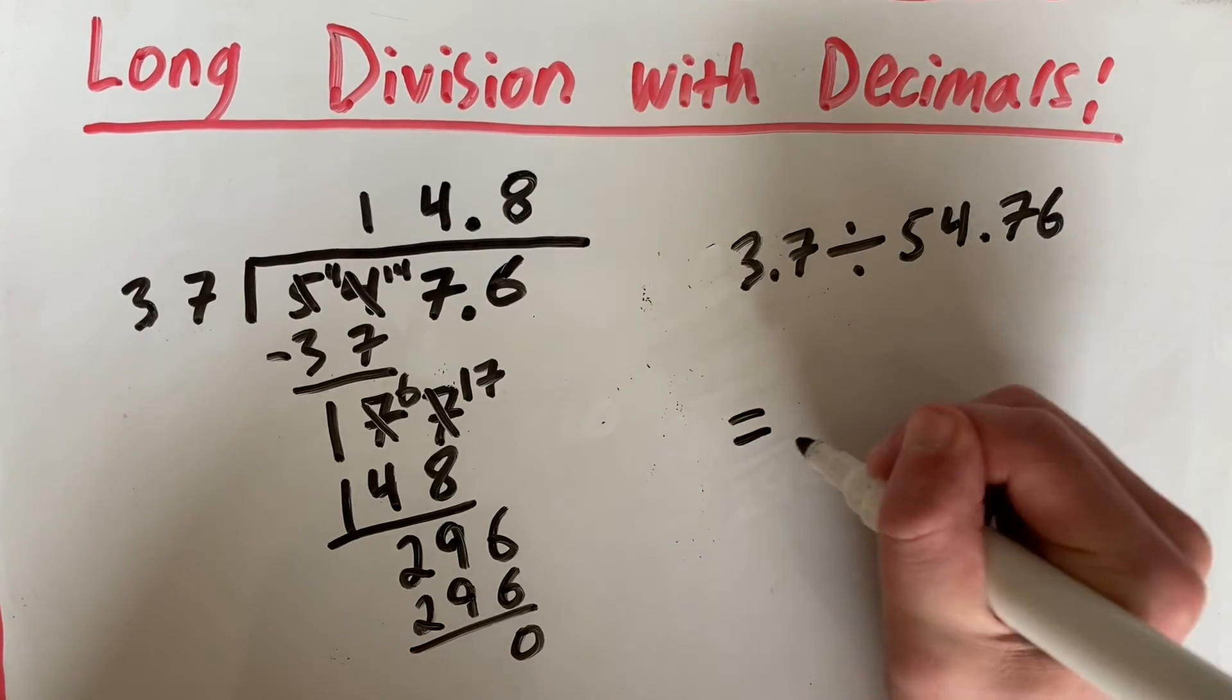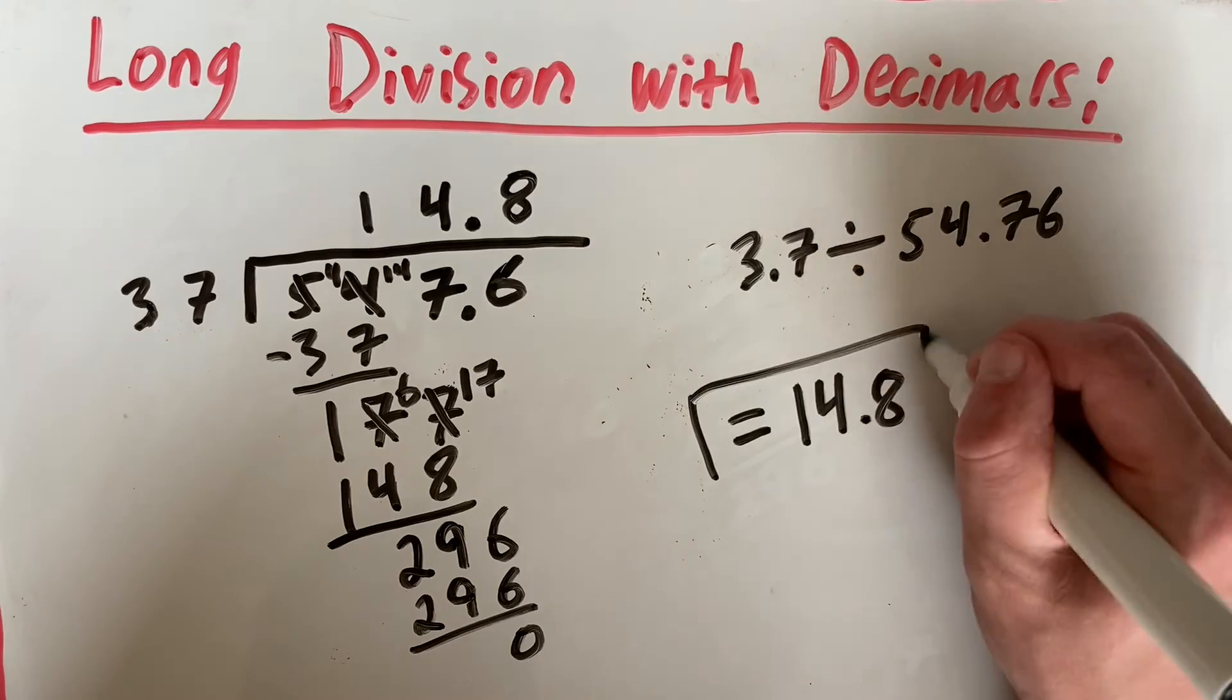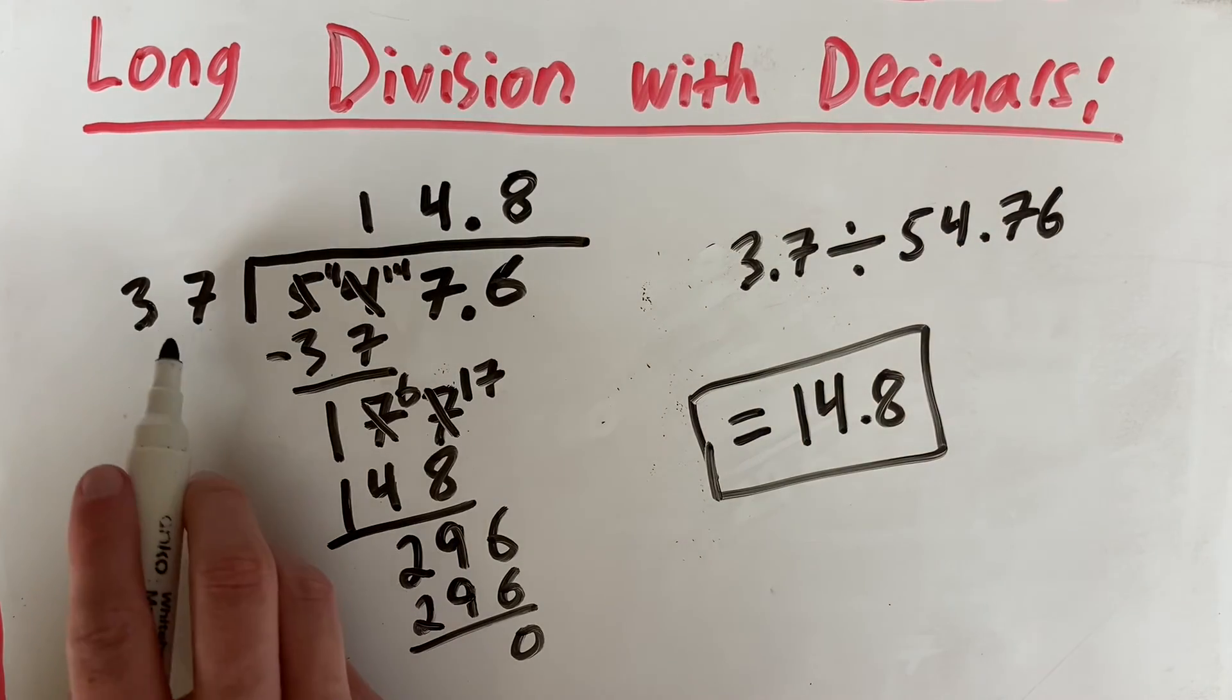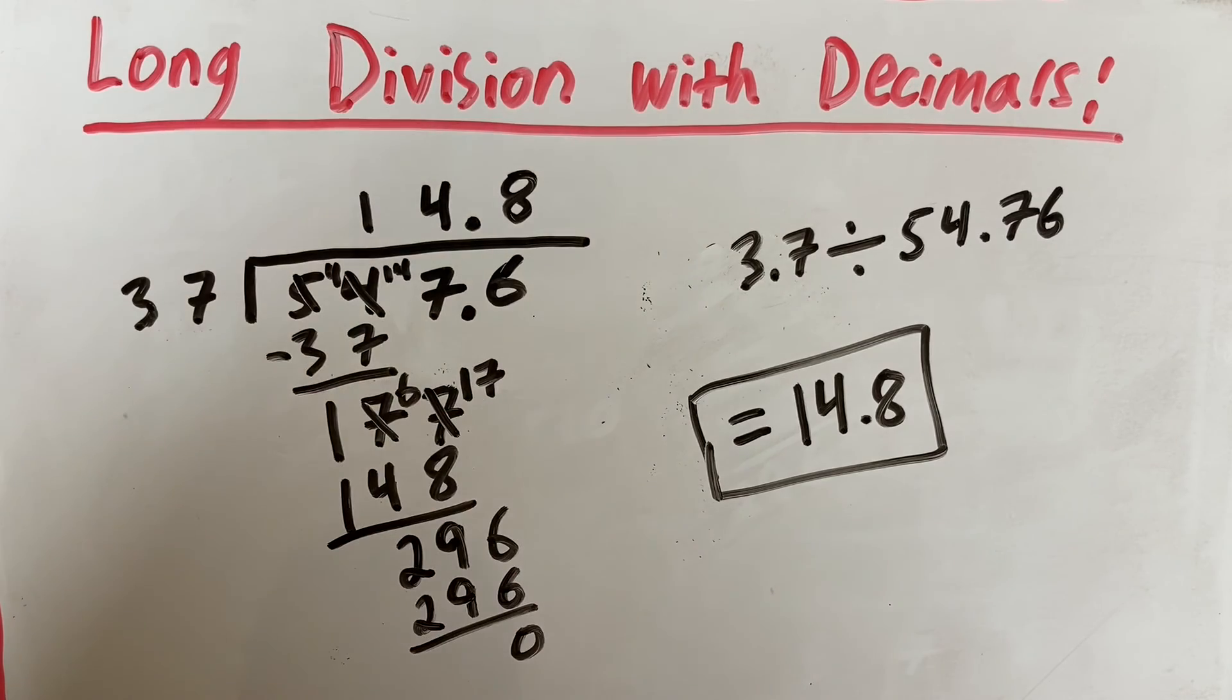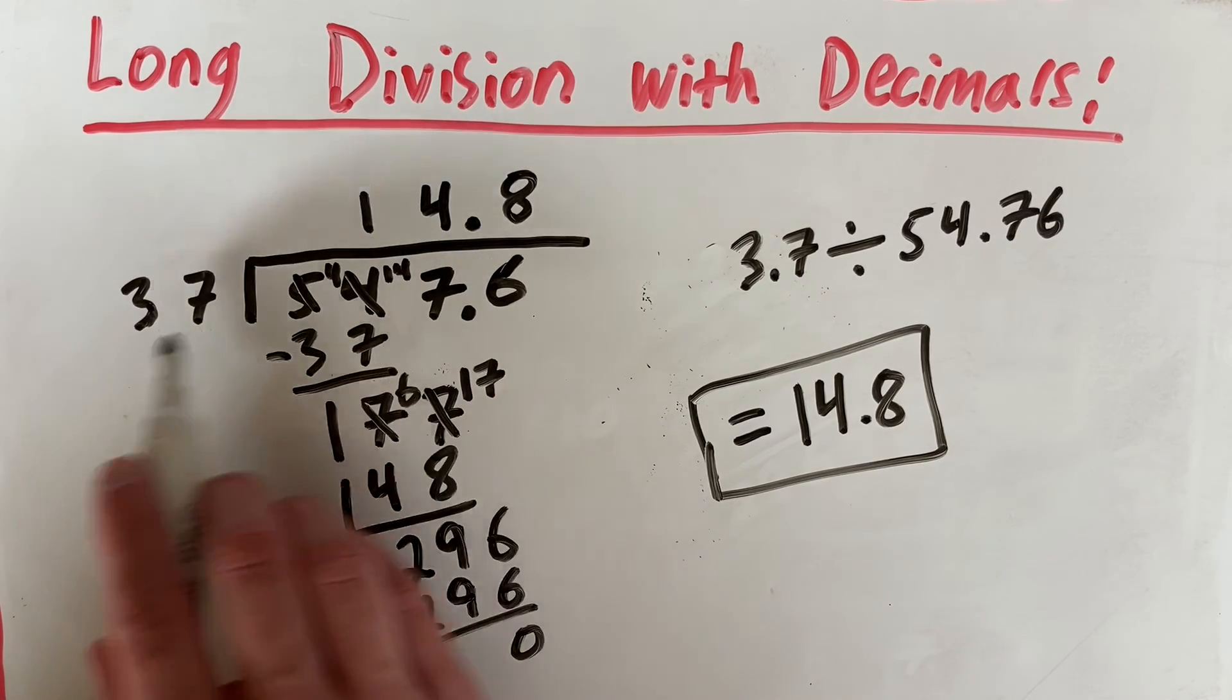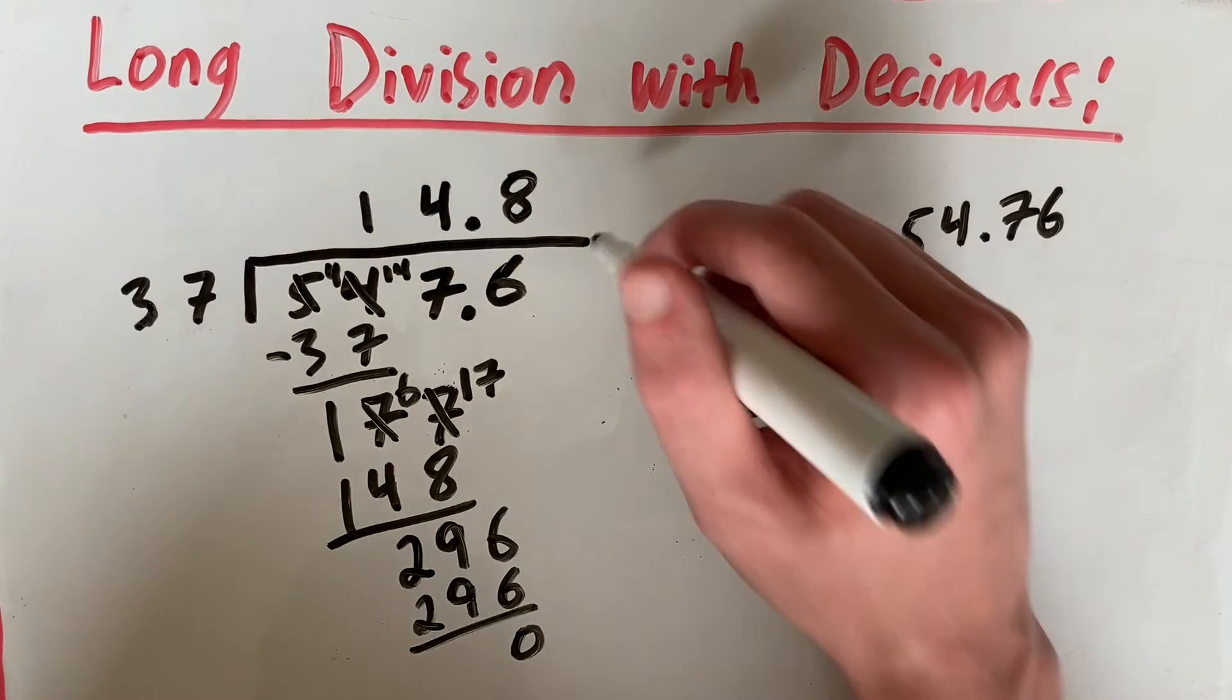So just to recap, you move the decimal over all the way to the end and you repeat that with your other number to keep it balanced. And then you solve it normally, making sure your decimal point lines up with the number right beneath it. And that's your answer.